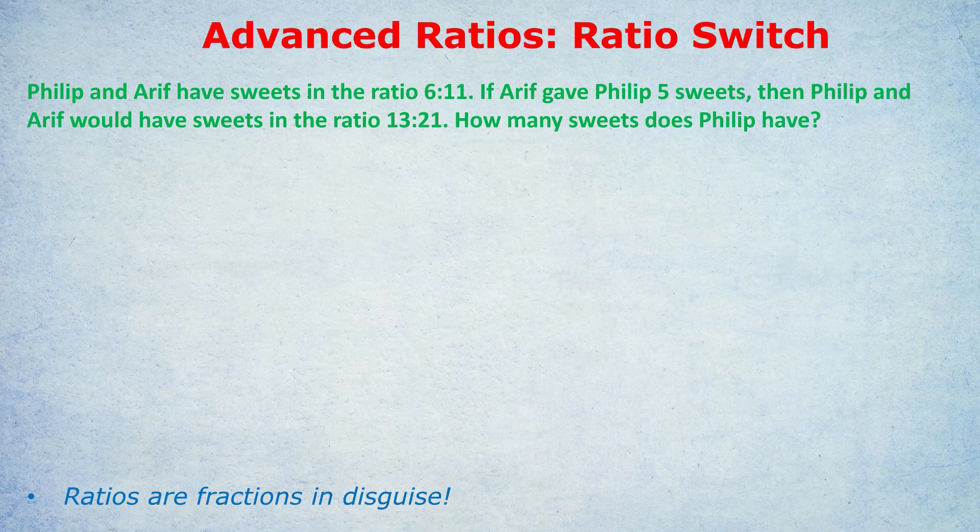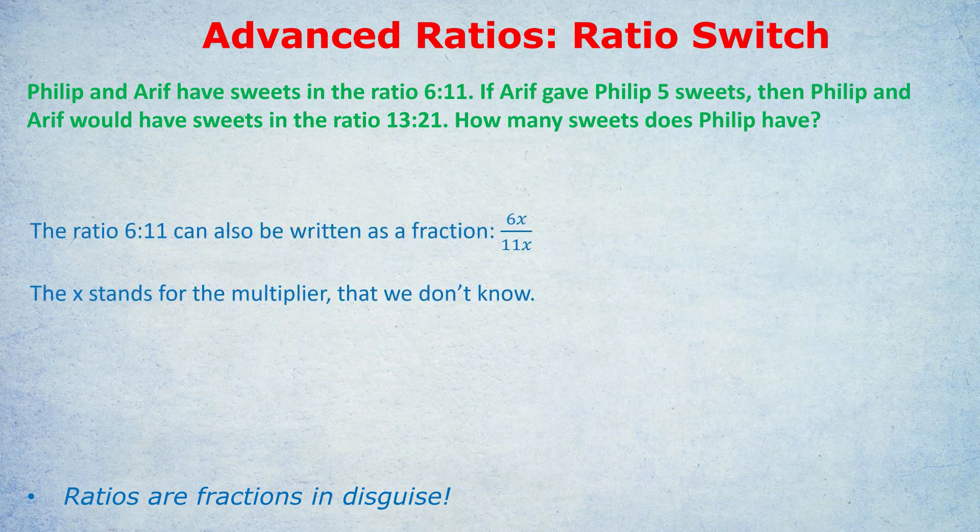Look at that first ratio, 6 to 11. You're used to seeing it with a colon, aren't you? 6 with two dots, 11. But you can also write it as a fraction. 6 over 11. As I've written in the bottom, ratios are fractions in disguise. I know what you're thinking. First of all, where did the x come from? And second of all, why are we writing it as a fraction? But let's explain that in a moment.